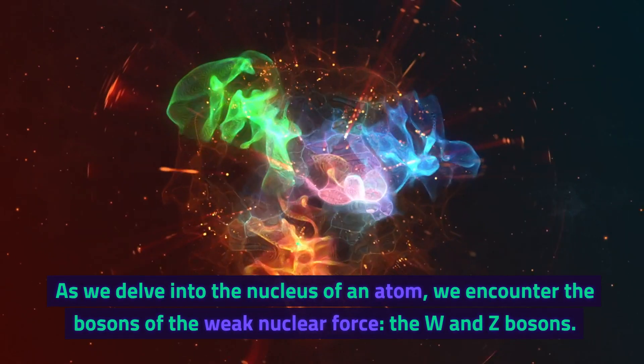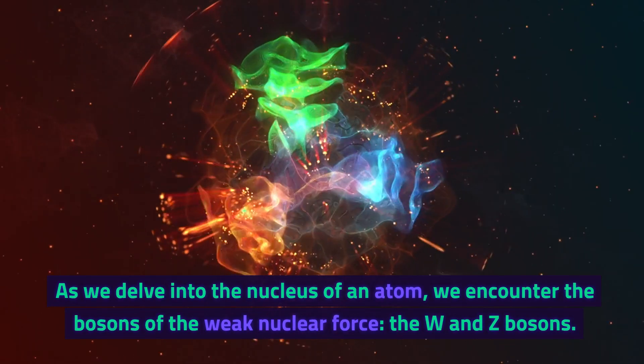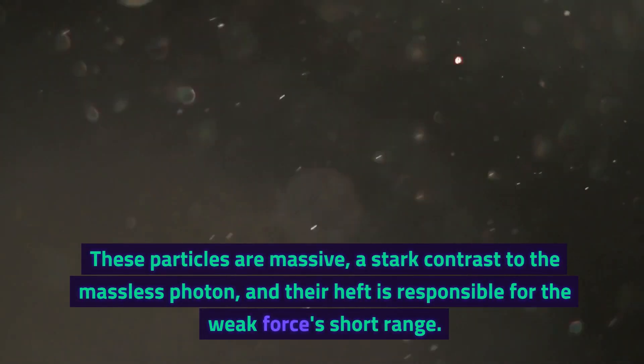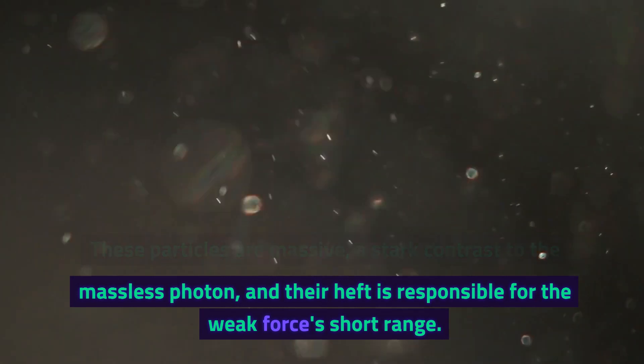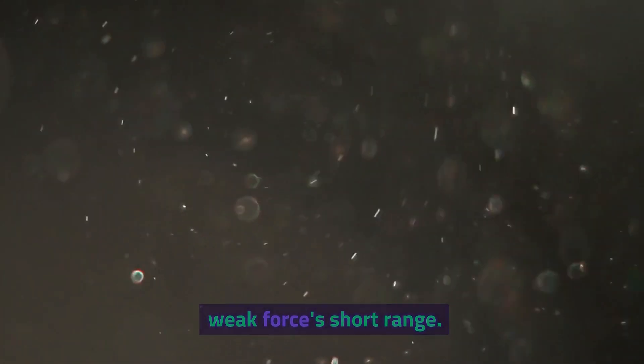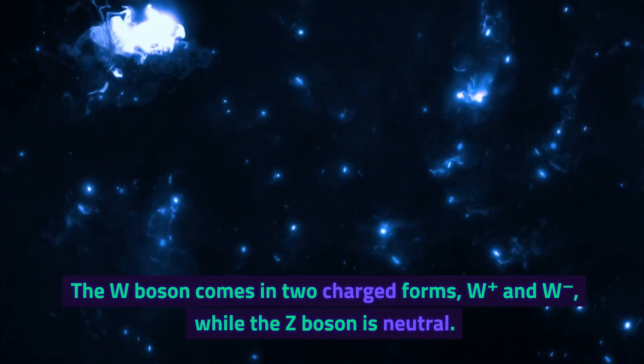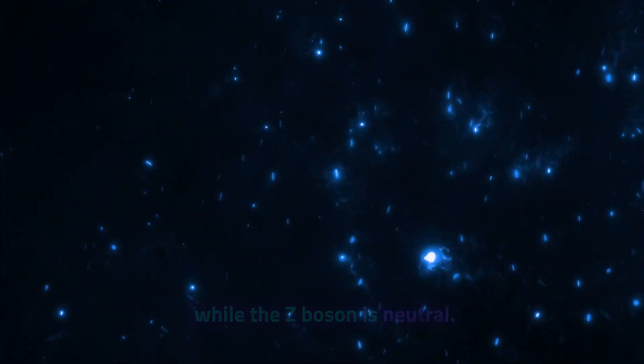As we delve into the nucleus of an atom, we encounter the bosons of the weak nuclear force, the W and Z bosons. These particles are massive, a stark contrast to the massless photon, and their heft is responsible for the weak force's short range. The W boson comes in two charged forms, W plus and W minus, while the Z boson is neutral.